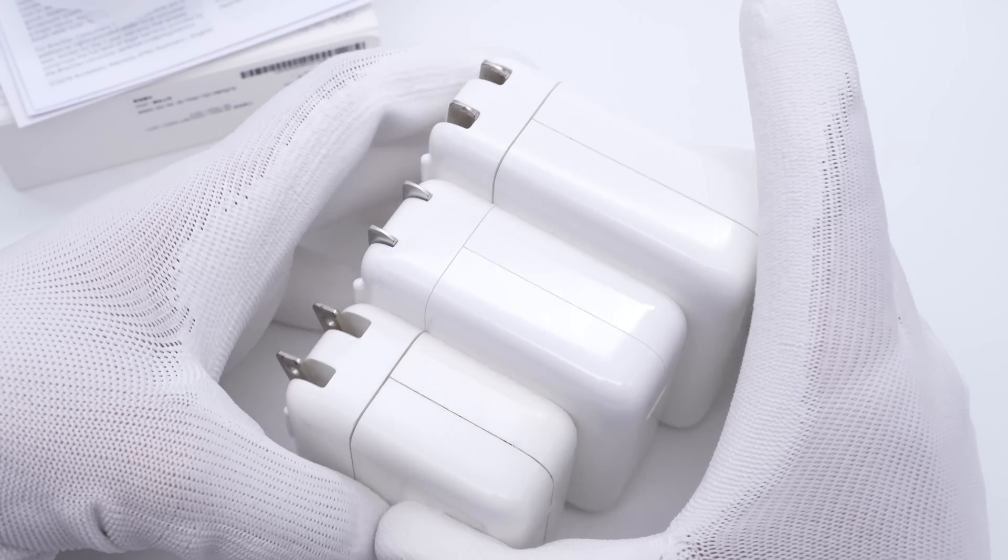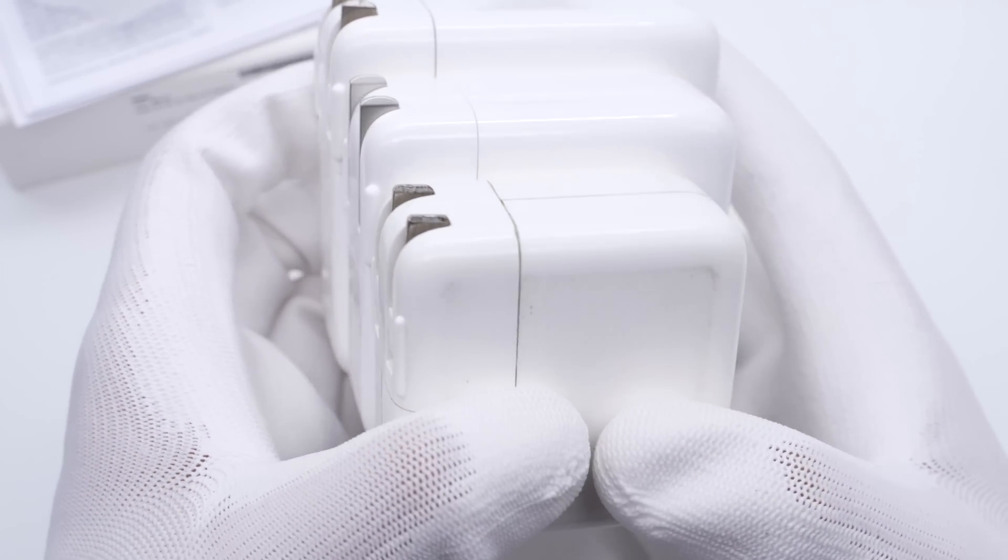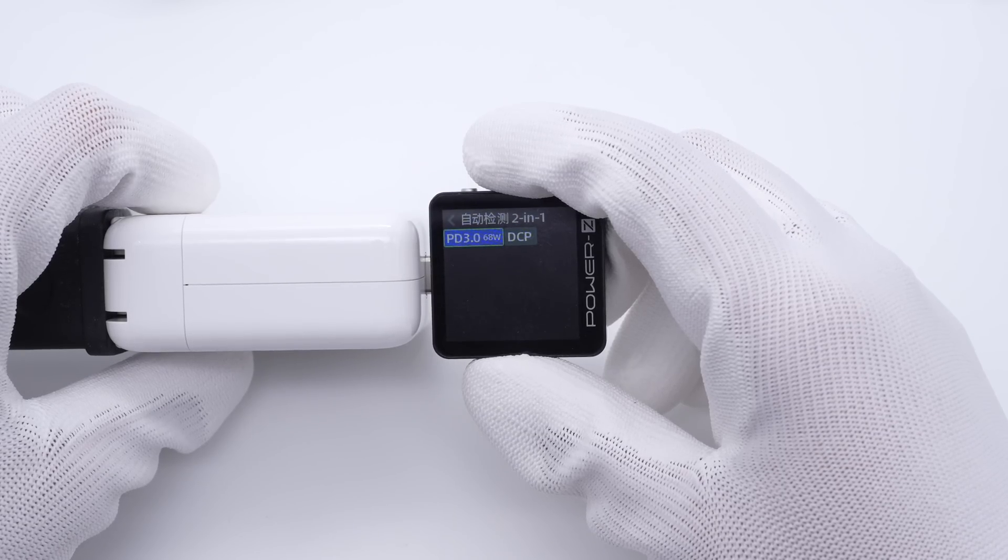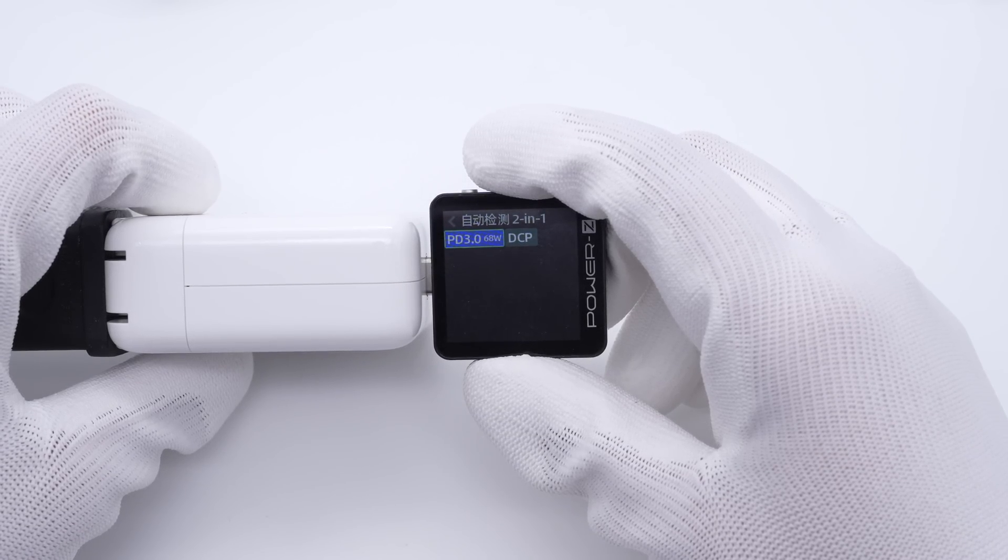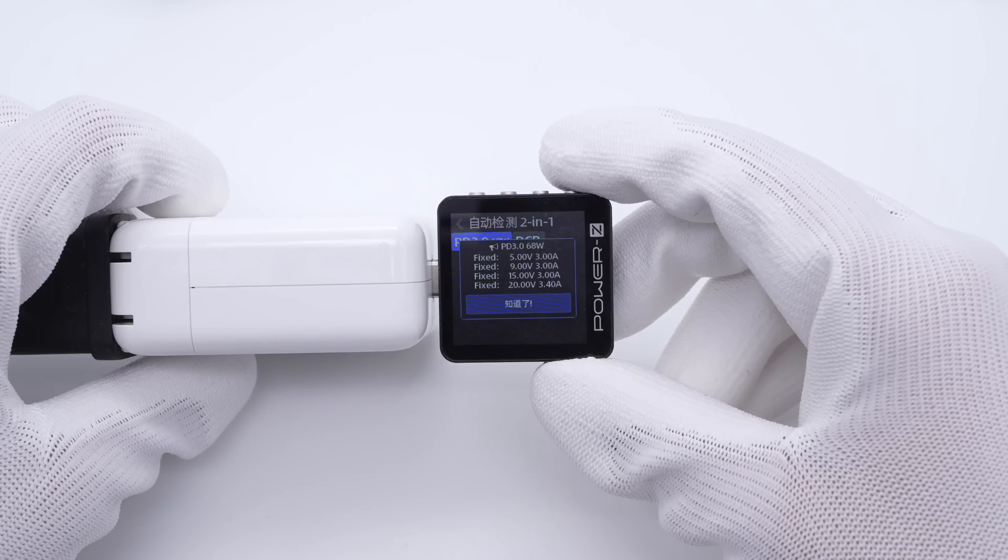Due to the GaN components, it's slightly smaller than the previous 67W. And it's slightly larger than the Apple 30W. The ChargerLab PowerZ KM003C shows it only supports PD 3.0 and DCP protocols. And it also has full fixed PDOs of 5V, 9V, 15V 3A.